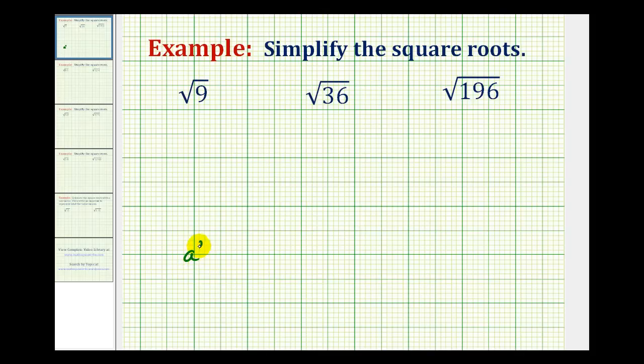If a squared is equal to b, then a is the square root of b. So for example, since 4 squared is equal to 16, then the square root of 16 is equal to 4. But it's also true that negative 4 squared is equal to 16, so negative 4 is also a square root of 16.